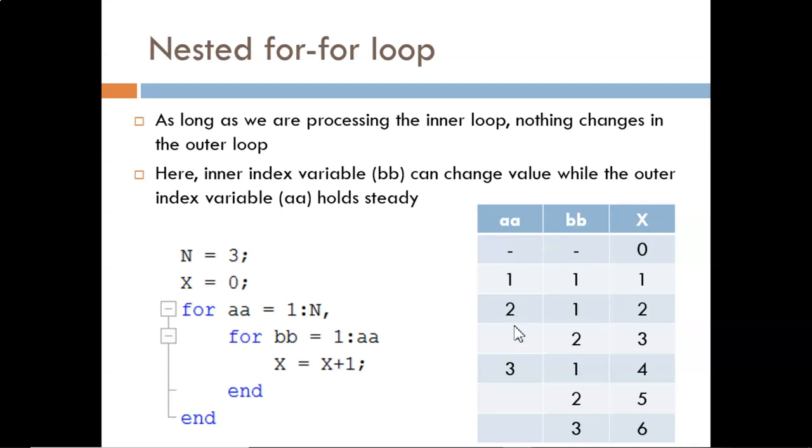These blanks in the AA column are intended to show that AA is not changing during these steps. For example, here it still equals 2, and here it still equals 3.